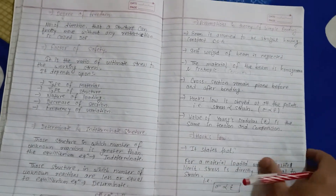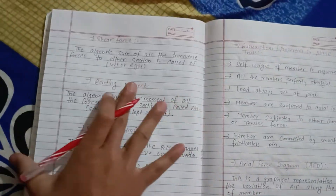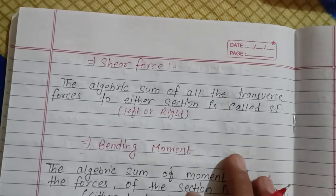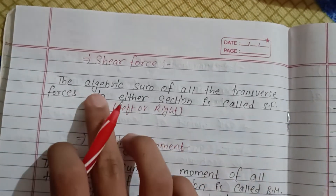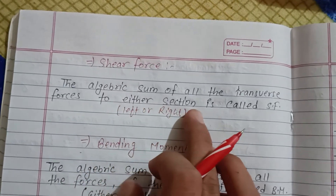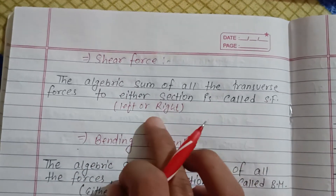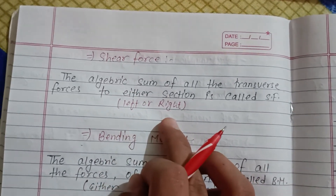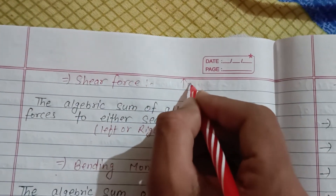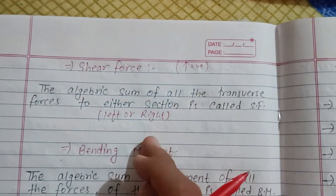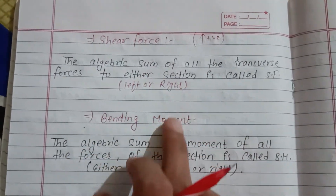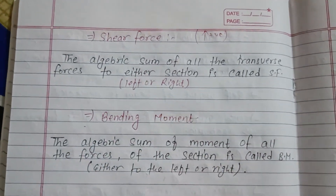Shear force: whenever the algebraic sum of all the transverse forces to either section is calculated, that is called shear force. The shear force can be positive or negative depending on whether we consider the left or the right side of the section.